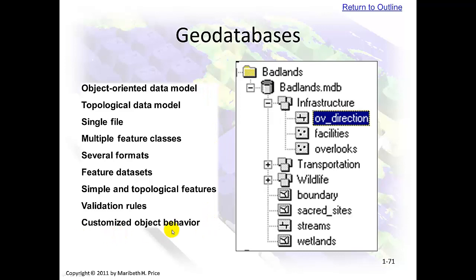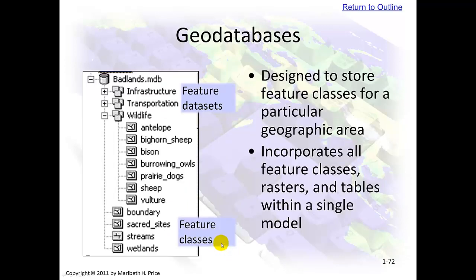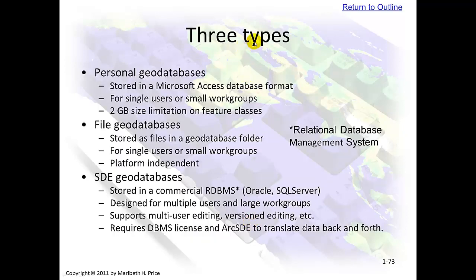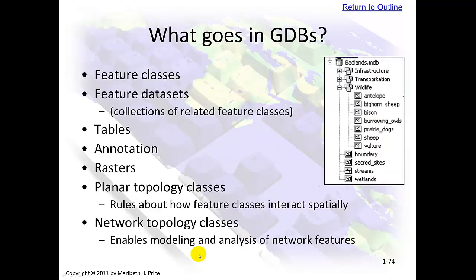Geodatabases. There are three types of geodatabases. You'll probably be using file geodatabases for the most part. Personal databases work off the Microsoft Access format, whereas file geodatabases are much more robust and you can store a lot more data, so most people skip personal geodatabases. A geodatabase can store feature classes, data sets, tables, annotation, rasters, and many other things — think of it as one large folder, but it does much more.